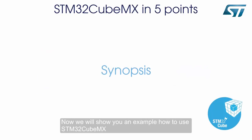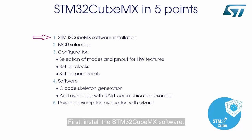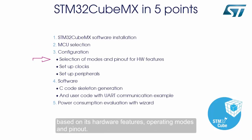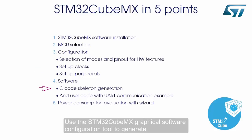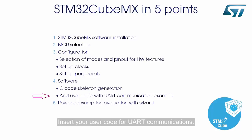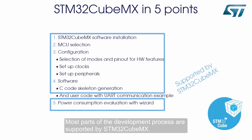We will show you an example of how to use STM32CubeMX to develop an application with a UART communication interface. First, install the STM32CubeMX software. Then select the correct MCU based on its hardware features, operating modes, and pinout. Select and configure the clocks and peripherals. Use the STM32CubeMX graphical software configuration tool to generate the C code skeleton and insert your user code for UART communications. Finally, simulate the power consumption using the calculator tool. Most parts of the development process are supported by STM32CubeMX.